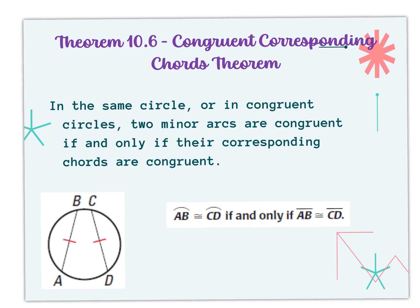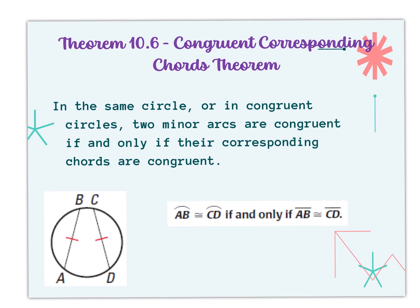The first theorem we're going to approach is Theorem 10-6, the Congruent Corresponding Chords Theorem. It says that if you happen to be in the same circle or in congruent circles — remember that equal circles with the same radius are treated as if they were the same circle — two minor arcs are congruent if and only if their corresponding chords are congruent.